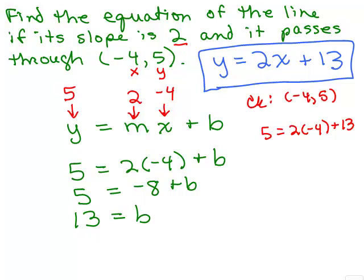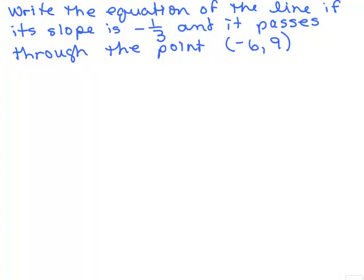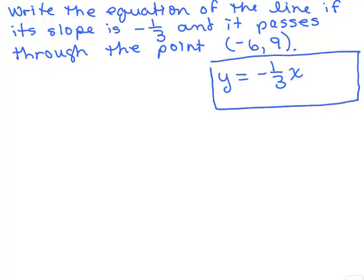Let's try another one. Write the equation of the line if its slope is negative one-third and it passes through the point (-6, 9). So remember, we know that it's going to be in the form y equals negative one-third x and we've got to find b. We don't know the value of b. So we're going to take our equation of a line in slope intercept form and we're going to plug in what we do know.